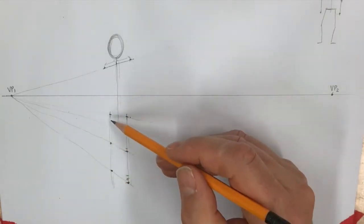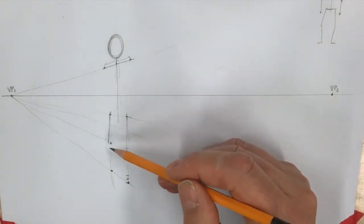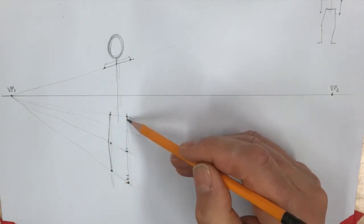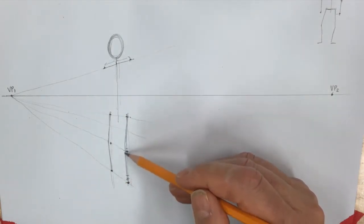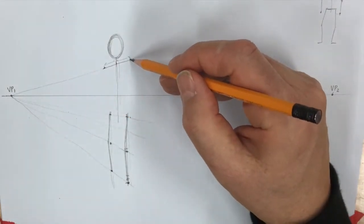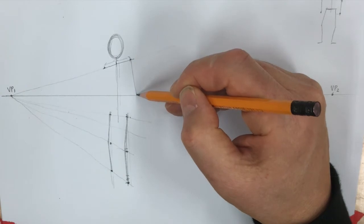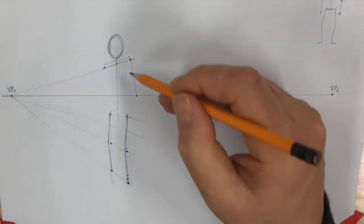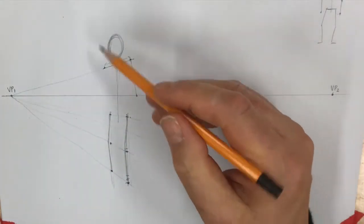So now, and you wouldn't really stand like this, so I'm just going to make it a little bit more natural looking by having the knees bent a little bit forward. And then of course I need some arms, so I'm going to put in some arms.